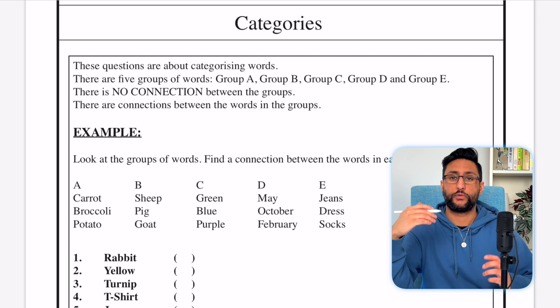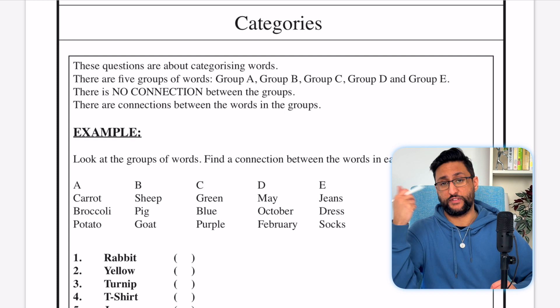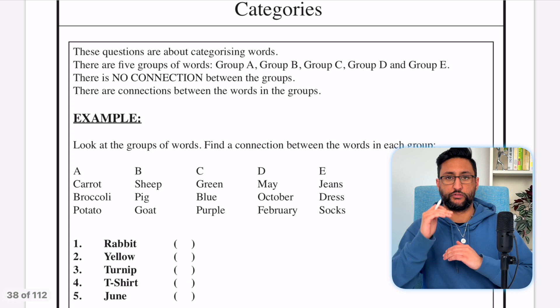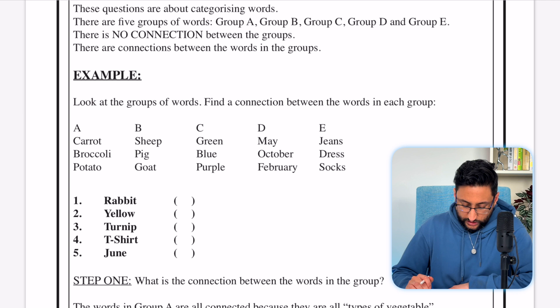In this video we're going to be looking at a verbal reasoning question type called Categories. Some of this material has been taken from Verbal Reasoning book 1, which can be found linked in the video description, alongside a free PDF with 20 questions for you to practice after this video. In these verbal reasoning questions you get given five groups and a list of words, and it's your job to figure out which group each of those words belongs to.